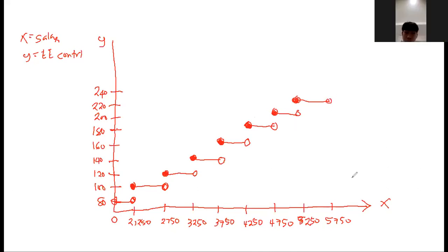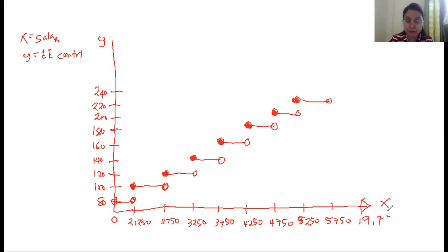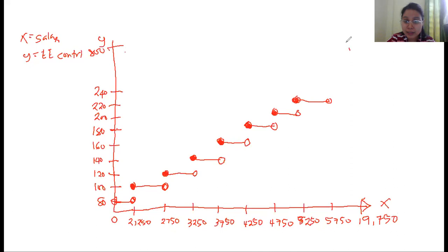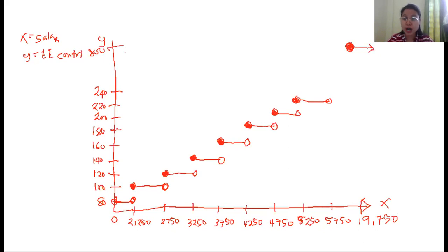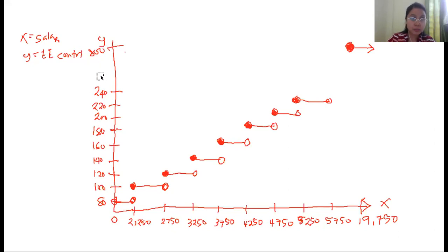For the last piece: 19,750 and above, you pay 800 pesos. Draw a circle at 19,750 — since it starts from 19,750 and above, shade the circle — and draw an arrow to the right since there is no upper limit. This means from 19,750 up to the largest possible salary, you will pay 800 pesos for your contribution.